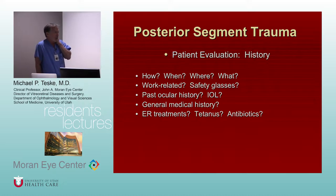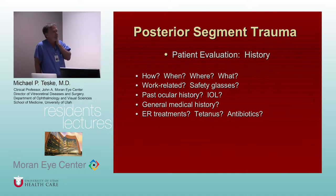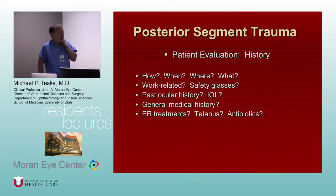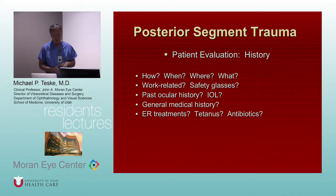Past ocular history — if you can get it — have they had prior eye surgery, intraocular lenses? That way, if you evaluate an eye and a lens is missing, you know whether to look for it inside the eye or whether it's been extruded. And then just the other obvious things about their general medical history.